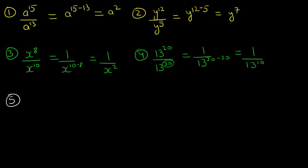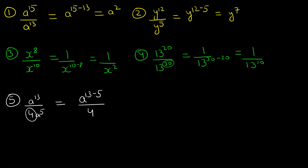In this problem we have 4a to the power of 13 over 4a to the power of 5. We have the variable a as the base, plus an additional number 4. We write the base a — since 13 is bigger, subtraction happens in the numerator: 13 minus 5 — over 4, since there is no other number in the numerator. We get a to the power of 8 over 4. That is our final answer.